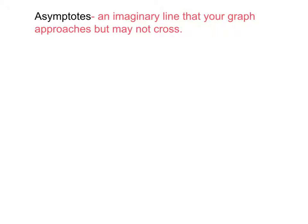That's important when we start talking about rational functions. Just like in that last section when we graphed polynomials, the end behavior drove the function, when we graph rational functions, our asymptotes are going to drive the function. An asymptote is an imaginary line that your graph approaches, but may not cross. Note that it says 'may not cross' — like any good rule, there is an exception, and for this one there is one exception, and we'll talk about it when we get there. It's with horizontal asymptotes. Your graph is drawn toward that asymptote but does not cross.